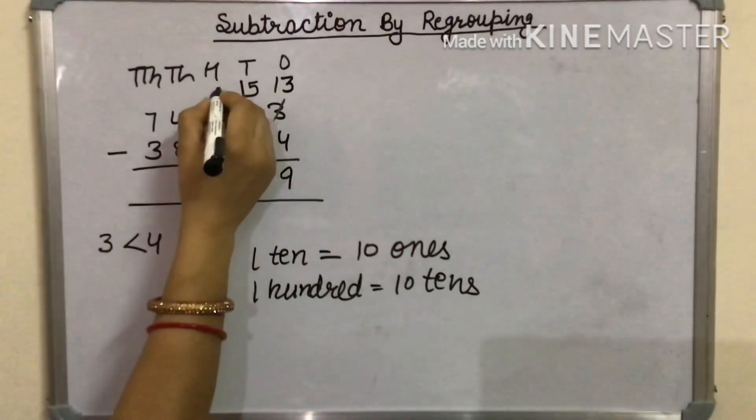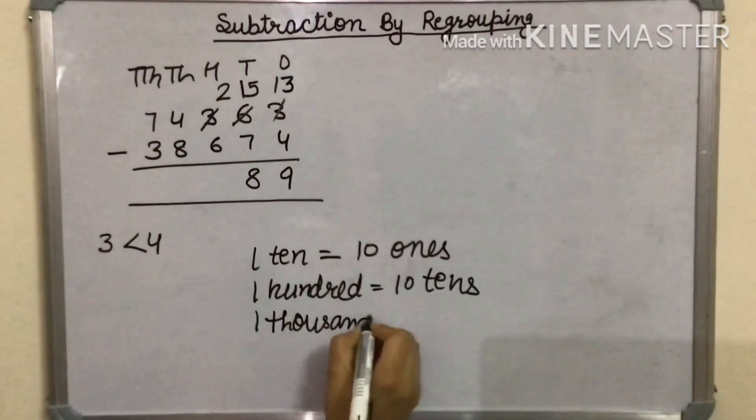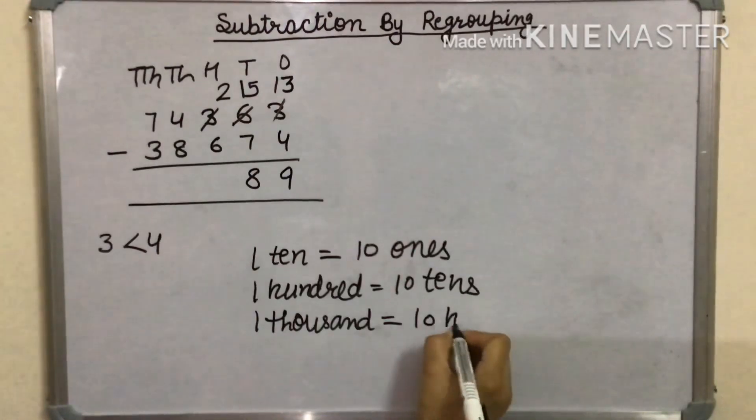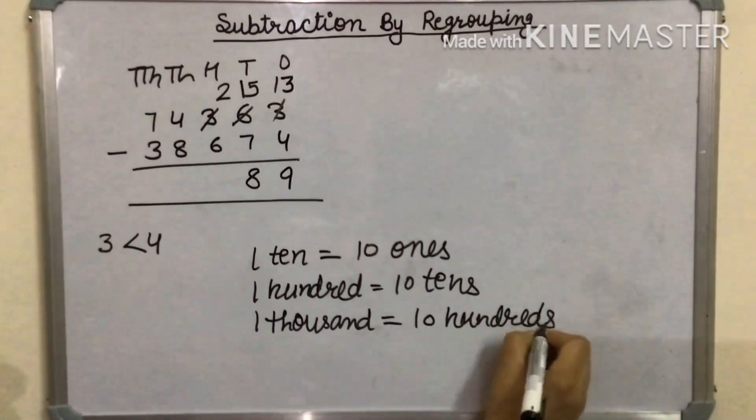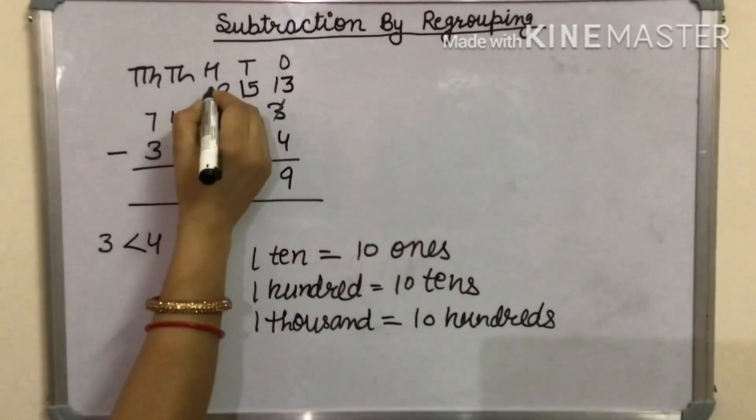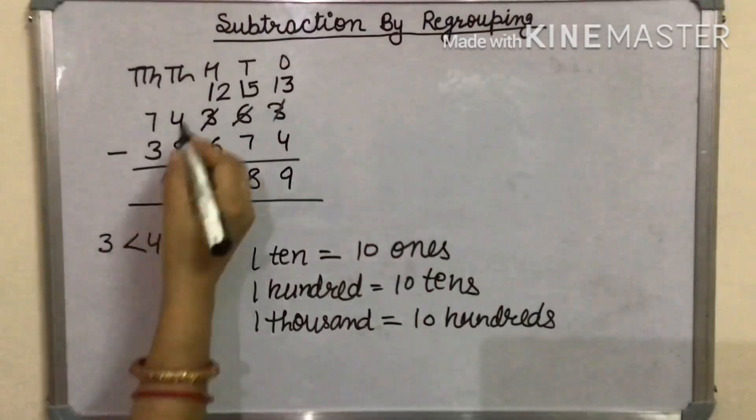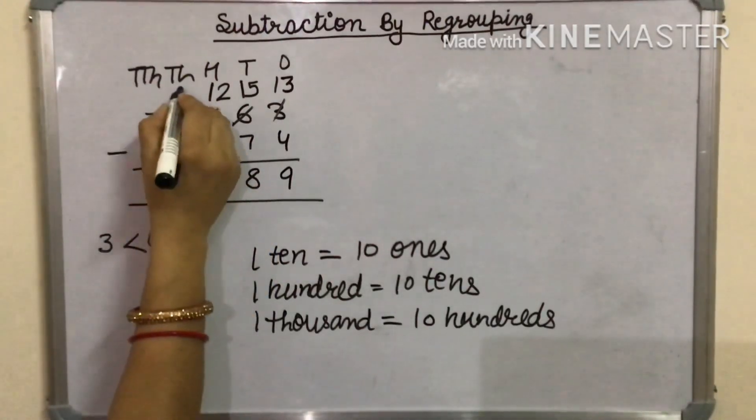The 100 digit will be 2. Now, we will borrow 1,000. 1,000 is equal to 10 hundreds. Like this, the 100s digit will be 12. 12 minus 6 is 6. At the 1,000th place, it remains 3.